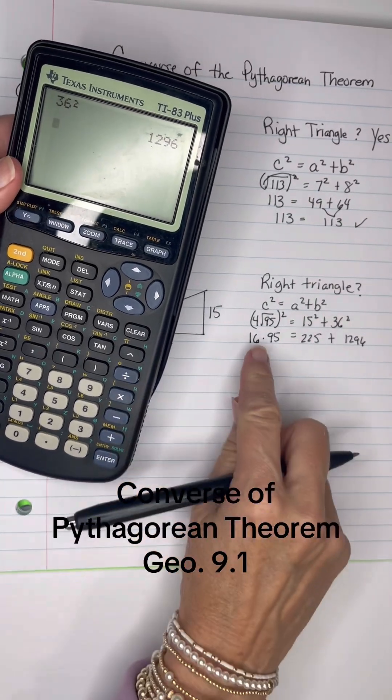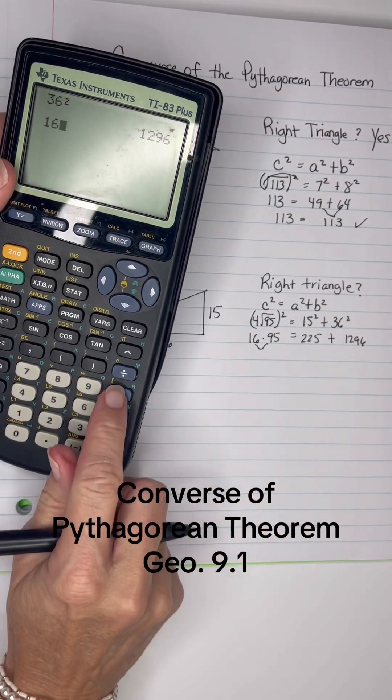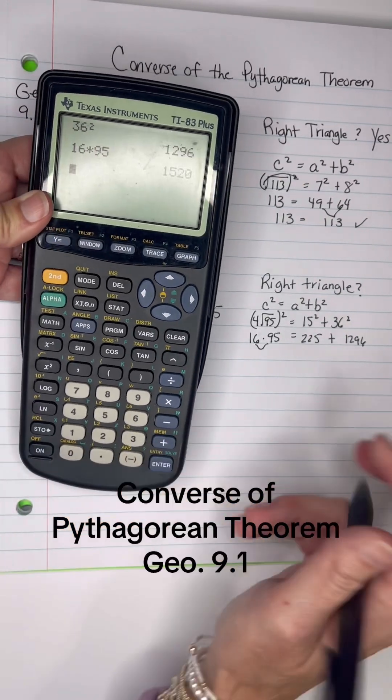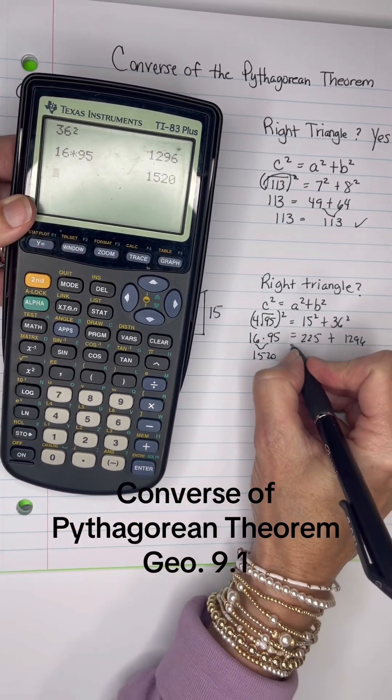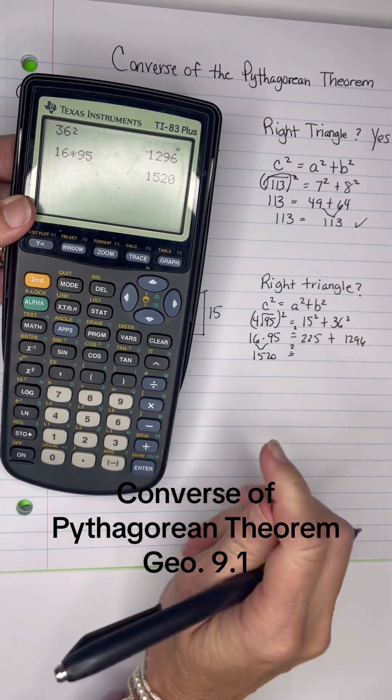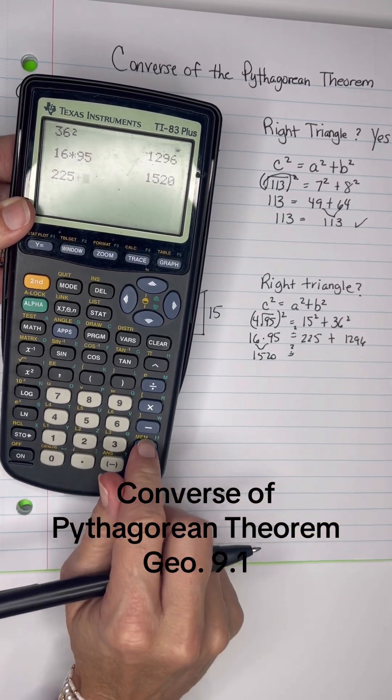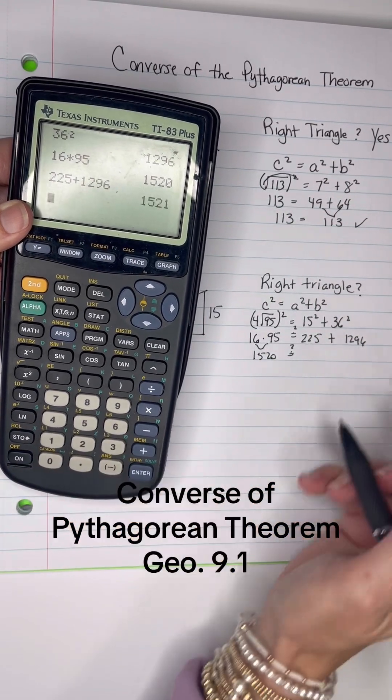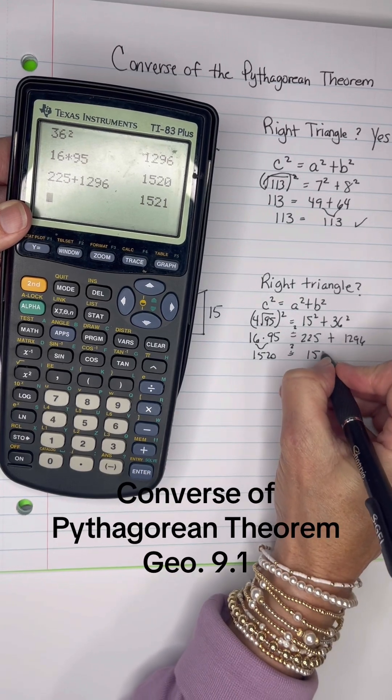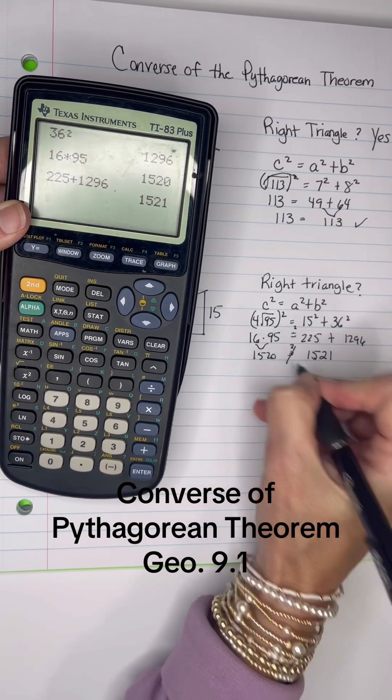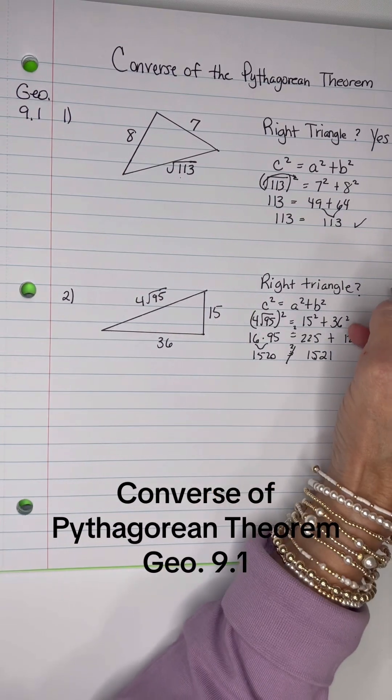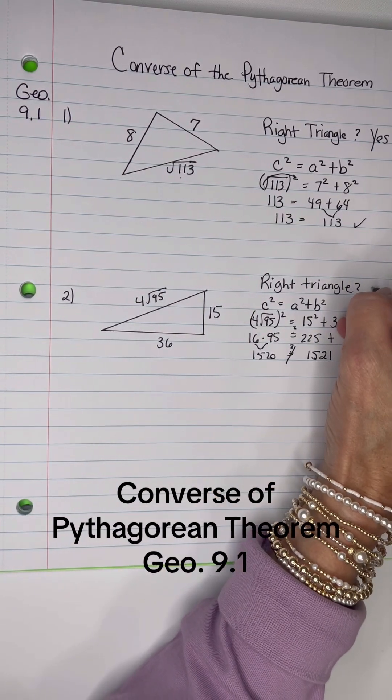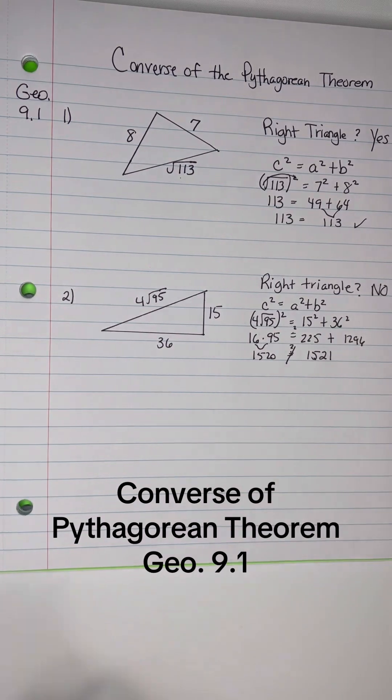Okay, let's go to the left side. 16 times 95 is 1,520. Let's see if it equals question mark here. 225 added to 1,296, which is 1,521. It does not equal, the left side does not equal the right side, so I will have to say that this is not a right triangle.